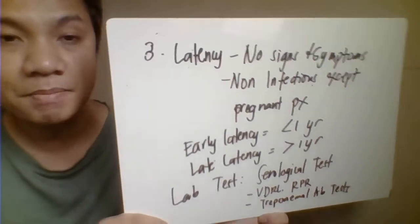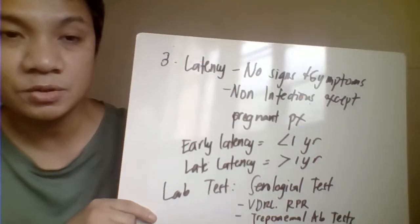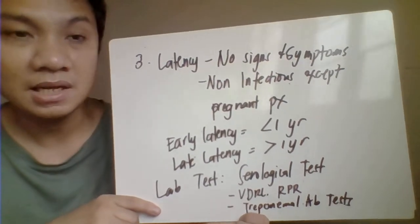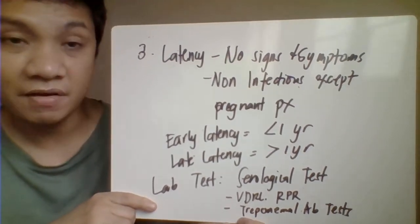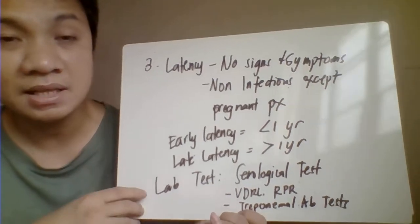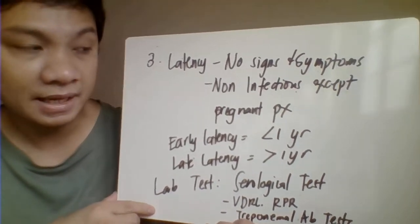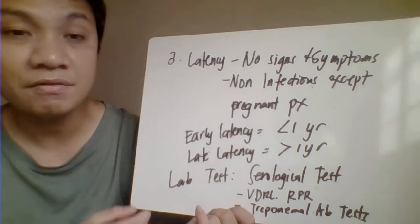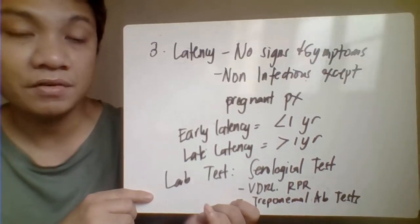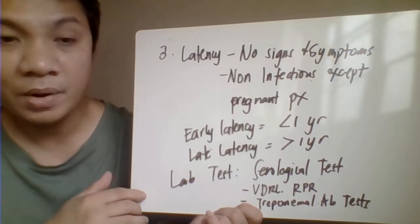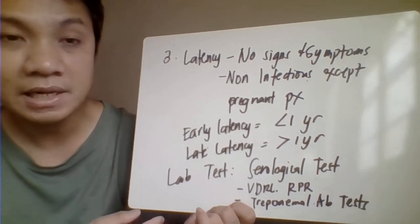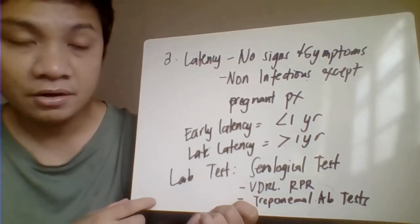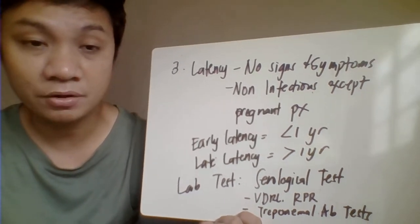The latency period is a stage where the patient has no signs or symptoms and is less infectious — non-infectious — except if the patient is pregnant, in which case infection can still be transmitted to the baby. The latency period is divided into early latency, which lasts less than one year, and late latency, which lasts more than one year. Laboratory tests include non-treponemal tests such as VDRL and RPR, and treponemal antibody testing.